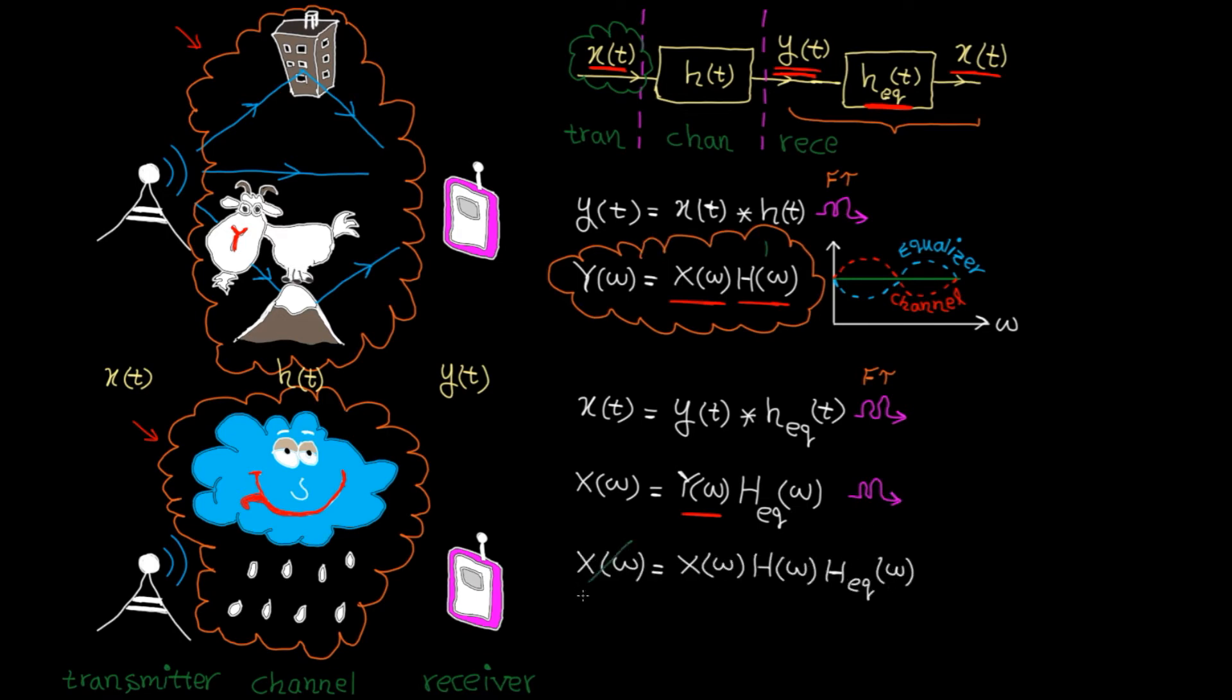X(ω) on the left side is cancelled by X(ω) on the right. So we get 1 equal to this, which means the frequency response of the equalizer is the inverse of the frequency response of the communication channel. If you understand this simple point, you are done with equalization.